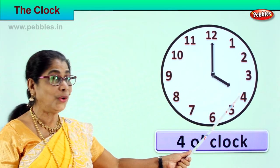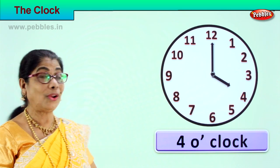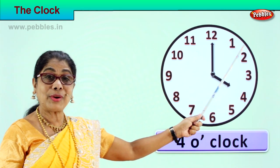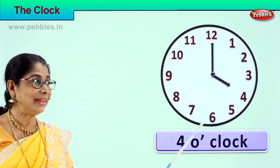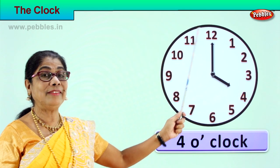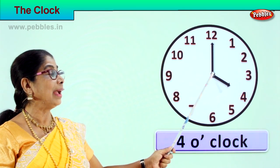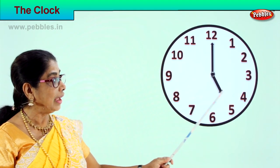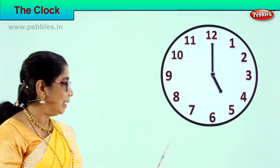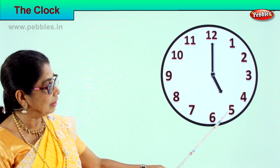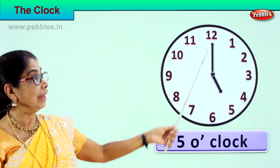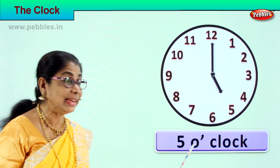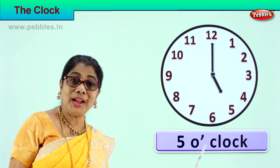The hour hand is on four, so we read it as four o'clock. Now the minute hand goes from one to two, three, four, five, six, seven, eight, nine, ten, eleven, twelve — it comes back and rests on twelve, and the hour hand shifts from four to five. Look — the hour hand is on five, pointing towards five, and the minute hand stays at twelve. We read it as five o'clock.